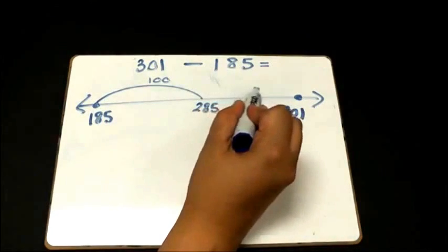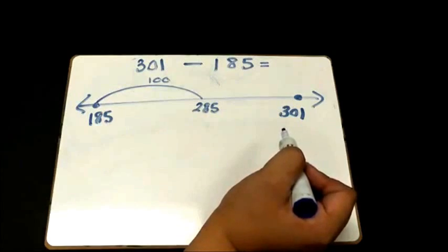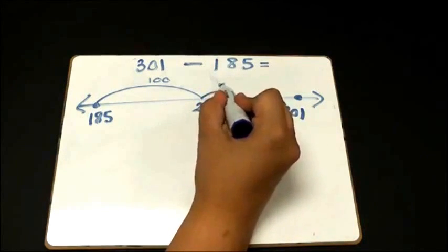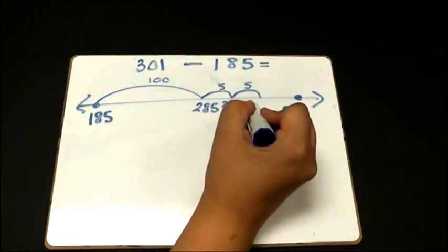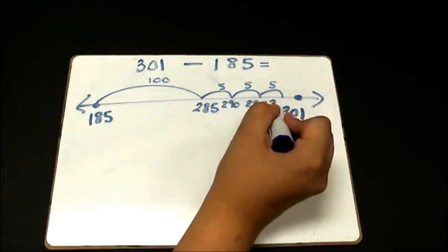Some students might see a jump of 15 gets them to 300, others might not. So I'll take a jump of 5, that's 290, a jump of 5, 295, a jump of 5, 300.